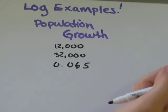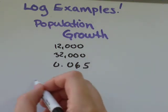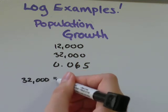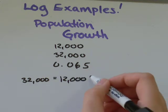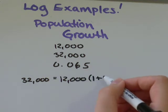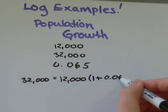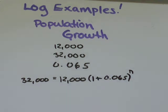I'm going to plug that into the formula. We have our final population, 32,000 equals initial population 12,000 in brackets 1 plus the rate of growth 0.065 to the number of years or months or whatever the time period.